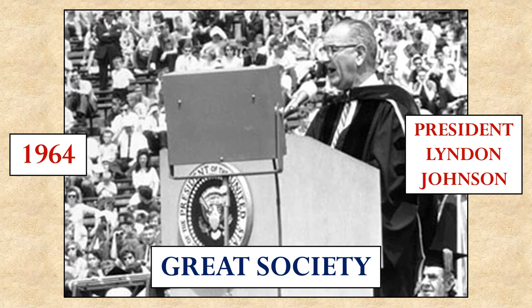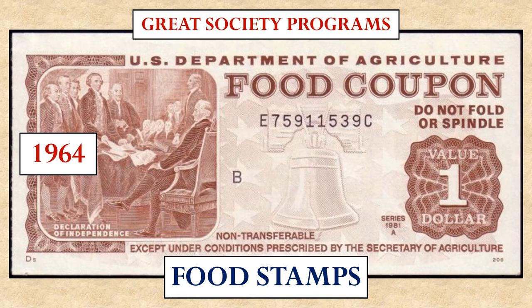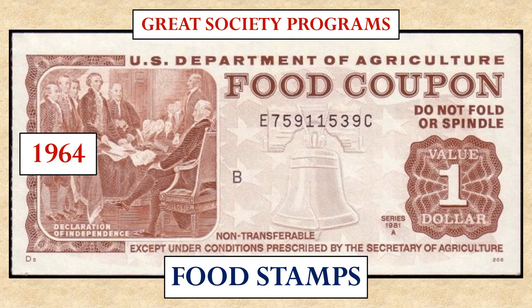Among the programs he advocated that were eventually passed was what is commonly known as food stamps. This Great Society program provided vouchers that people of low income could use to buy food. This same sort of program exists today, but generally rather than providing coupons, it is done electronically through what look like credit cards — commonly known as EBT cards, or Electronic Benefit Transfers. People below a certain income are automatically given assistance to buy food.